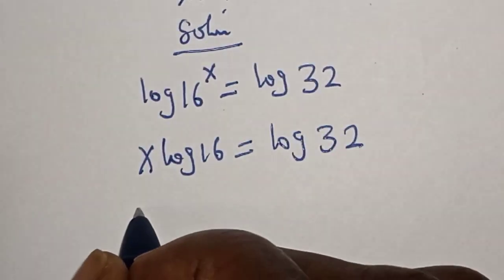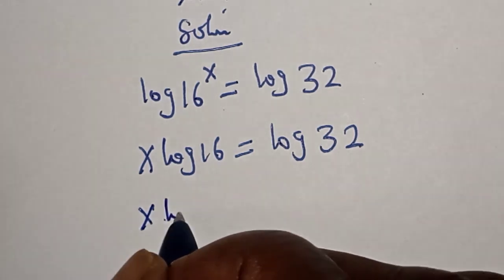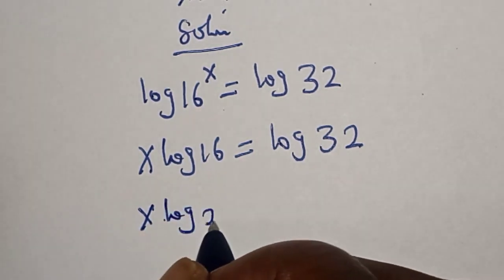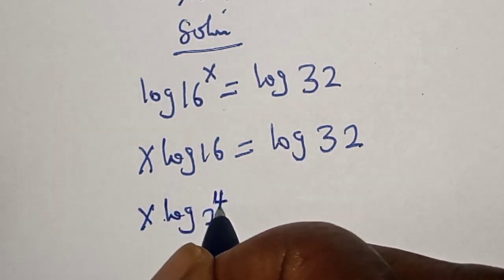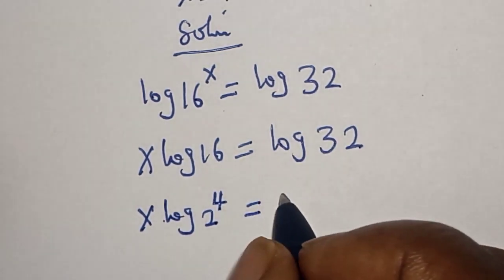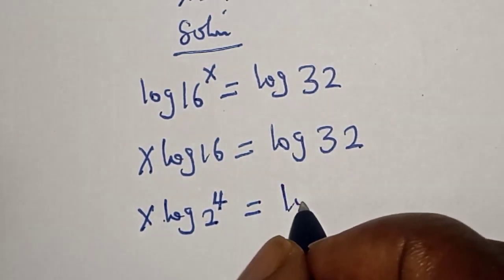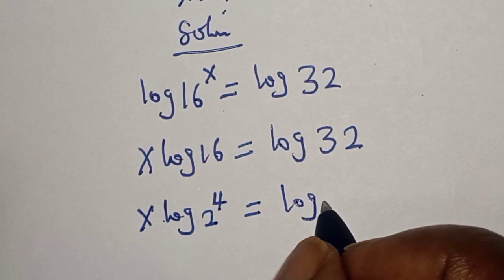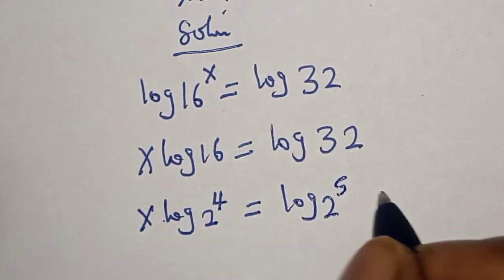Then s log 16... 16 is 2 raised to power 4, is equal to log 32, which is 2 raised to power 5.